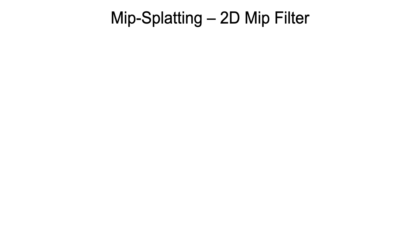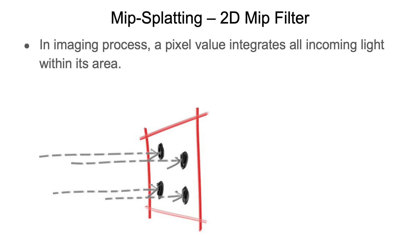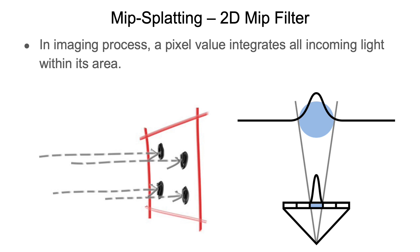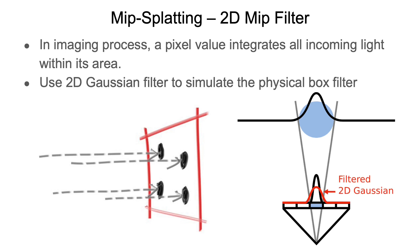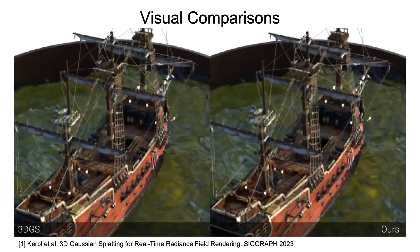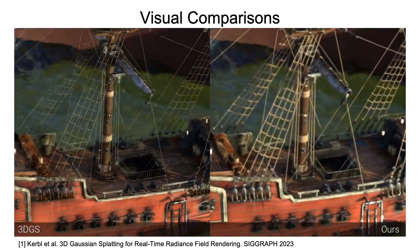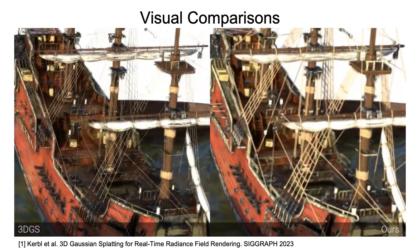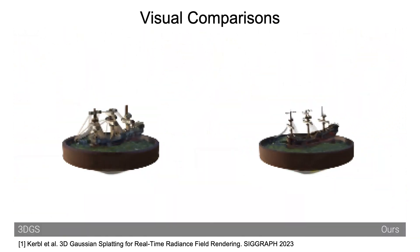Next, we propose a 2D MIP filter for anti-aliasing. In physical imaging, a pixel value integrates all incoming lights falling inside the pixel area. To simulate this, we use a 2D Gaussian filter to approximate a physical box filter. Our 2D MIP filter is configured to approximate exactly a single pixel area. Here we show a comparison with 3DGS — our method eliminates the dilation and erosion artifacts in 3DGS.